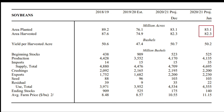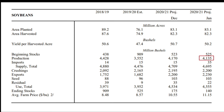Now let's look at soybeans, again from the January WASDE report. 82.3 million acres harvested. Yield for 2020, most of it harvested in fall of 2020, was 50.2 bushels per acre. Beginning stocks are 525 million bushels. Production — acres harvested times yield per harvested acre — is 4,135 million bushels. Imports again are not very significant, coming primarily from Canada. Total supply is 4,695 million bushels.